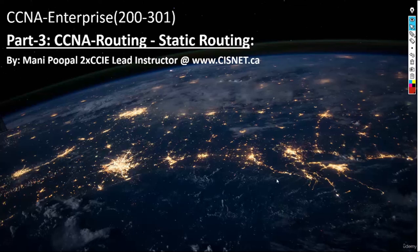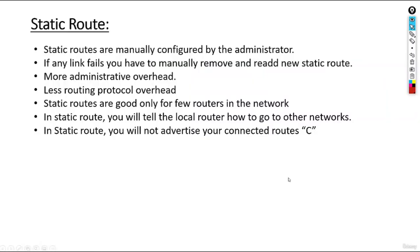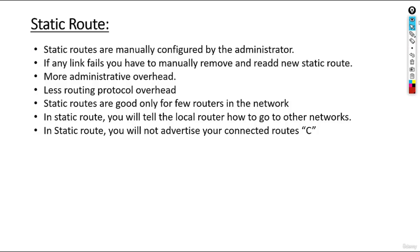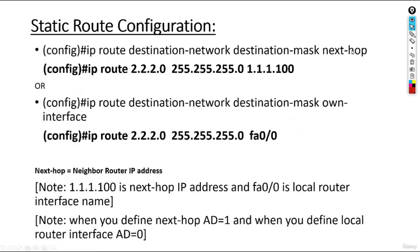Welcome to CCNA Enterprise 200-301, Part 3: CCNA Static Routing. Static routes are manually configured by the administrator. If any link fails, you have to manually remove and add a new static route — there is more administrative overhead. There is less routing protocol overhead. Static routes are best when you have a small number of routers. In static routing, you tell the local router how to reach other networks, but you do not advertise your own connected routes — this is the exact reverse of dynamic routing protocols.